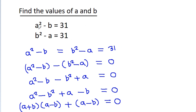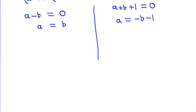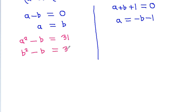Using the original equation a squared minus b equals 31 with the condition a equals b, we substitute to get b squared minus b equals 31, so b squared minus b minus 31 equals 0.